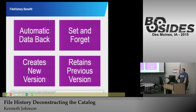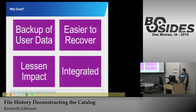File history benefits: it's not a manual backup — once you have it turned on and enabled you can forget about it, as long as it has a connection. Once it reconnects, it backs up. It creates a new version for each file backed up and retains all previous versions. It's integrated into Windows 8 and Windows 10. In the enterprise environment, if a machine gets infected, you can quickly restore back and not lose any user data.